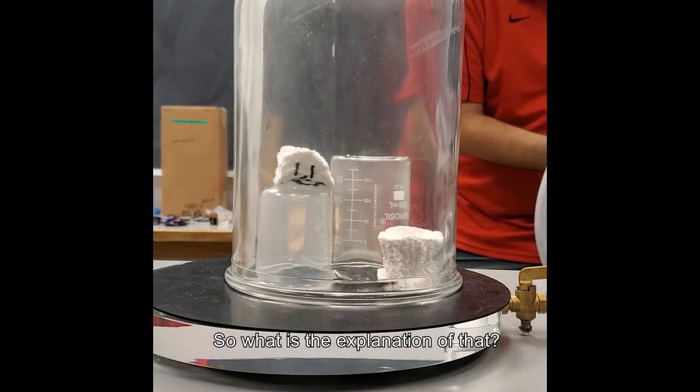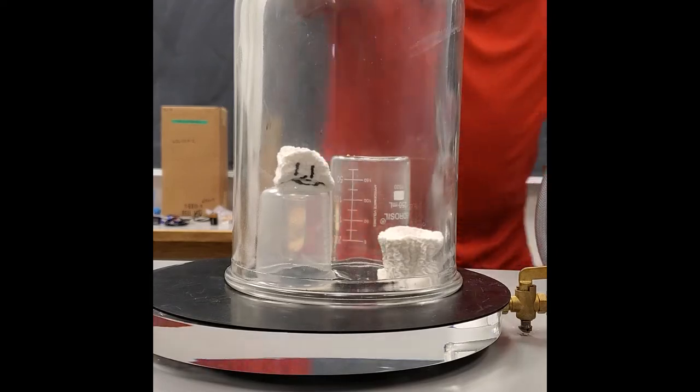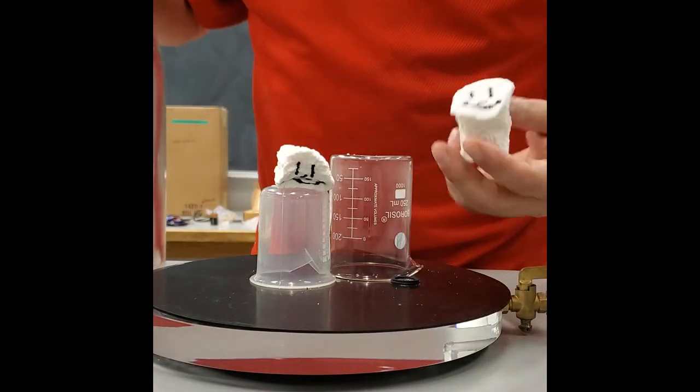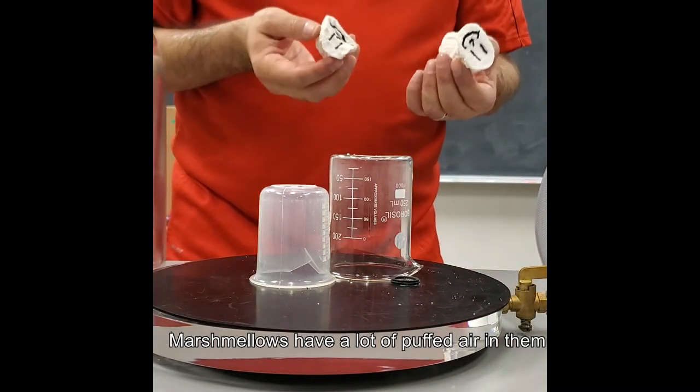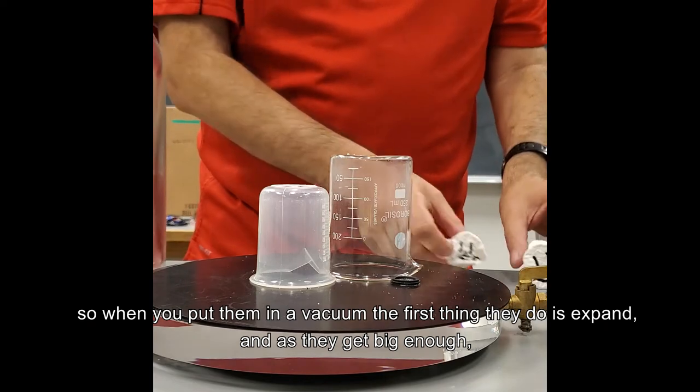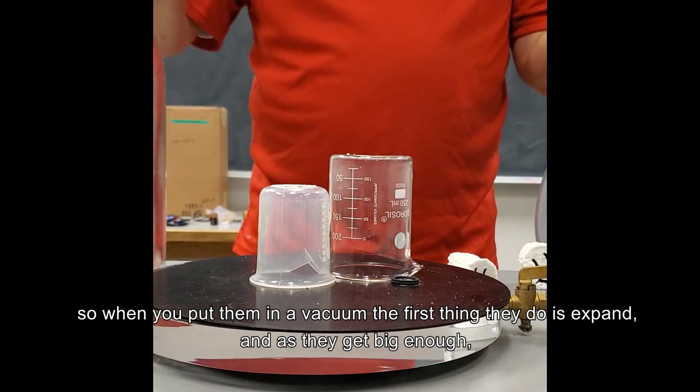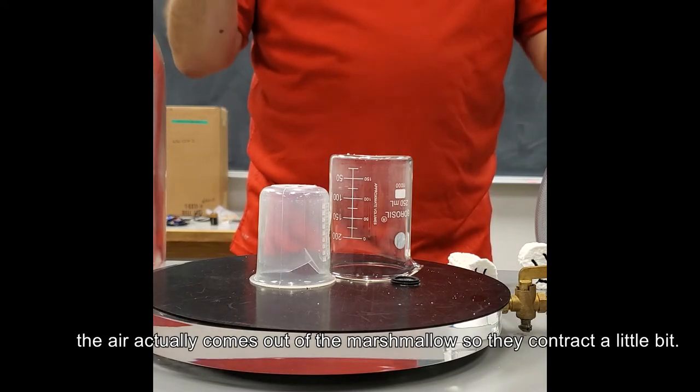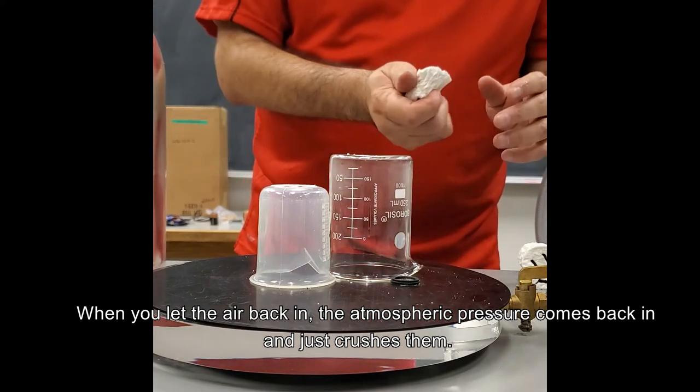So what's kind of an explanation for that? Alright, marshmallows have a lot of puffed air inside them, and so when you put them in the vacuum, the first thing they do is expand. And then as they get big enough, the air actually comes out of the marshmallow and they start to contract a little bit. And then when you let the air back in, the atmospheric pressure just crushes them.